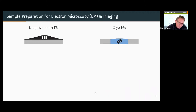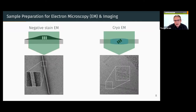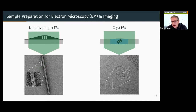In negative stain, we have a heavy metal solid embedding. In cryo-EM, we have the carbon film with a very thin layer of around 50 nanometer thickness with proteins swimming in it. The protein in negative stain appears white with high contrast, but resolution is limited to around 16 ångström. In cryo-EM, we have low contrast but very high resolution. These two methods — negative stain EM and cryo-EM — are complementary and both used very often.